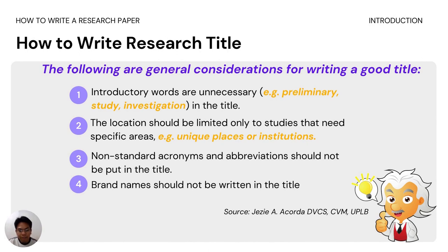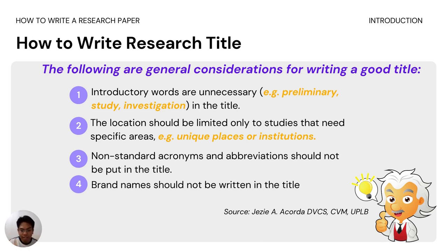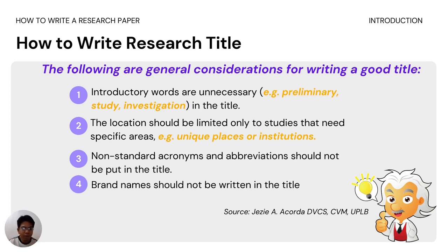Here are general considerations for writing a good title. Number one, some introductory words are unnecessary — like 'preliminary study' or 'investigation.' Don't write 'A study about gender discrimination'; just drop those introductory words. Next, the location should be limited only to studies that need specific areas. For example, sometimes it's no longer necessary to include the school name or location unless there's something unique about it.